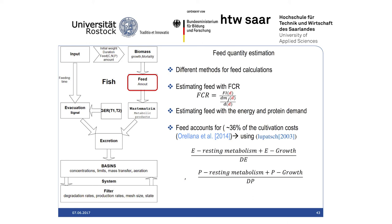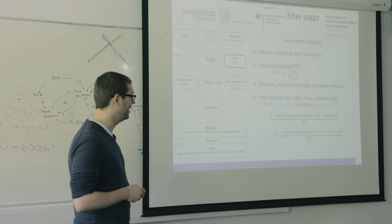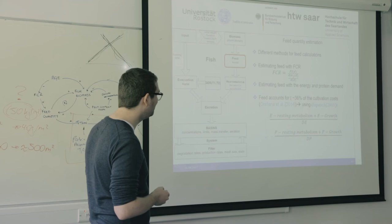Now that we know how fast the fish is growing, how do we quantify the feed needed? There are again many models — like the FCR introduced earlier. You can estimate the feed with the energy and protein requirements the fish has. This is especially important as 36% of cultivation costs in systems like ours come from the feed, so you want to use as little as possible and as much as needed for maximum growth — you have to be really precise.